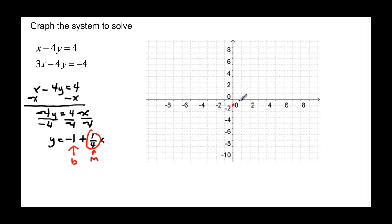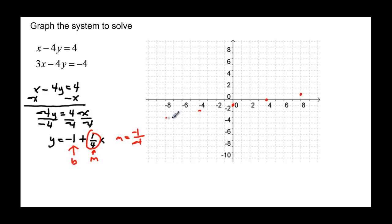Y intercept is negative one. I go up one and over four, then up one and over four again. Or remember that m could also be negative one over negative four — so I could go down one and to the left four. I'll start from my y intercept to get to the left part of my graph — down one to the left four, and again down one to the left four. If you have a straight edge on your paper it's much easier to draw the line.